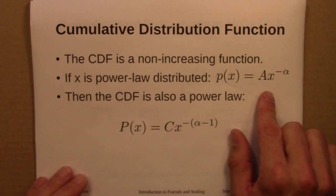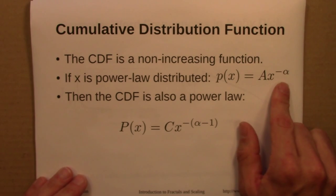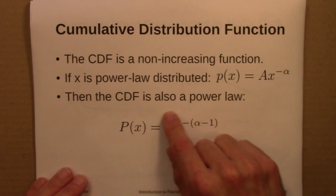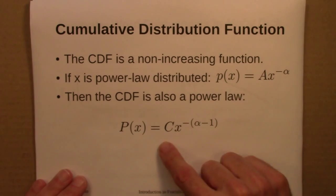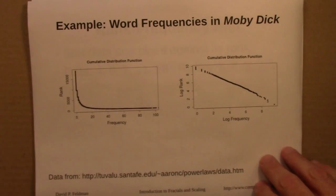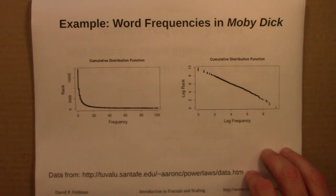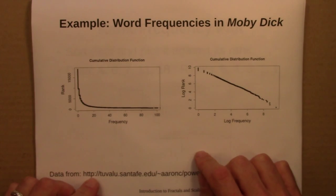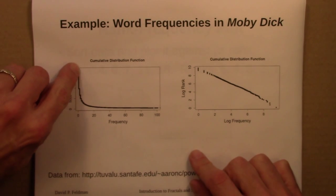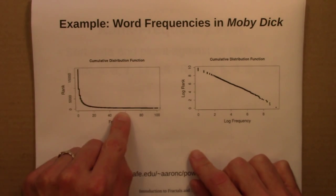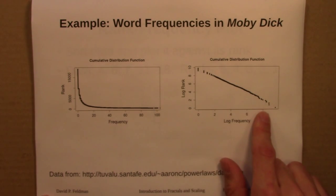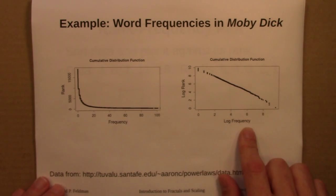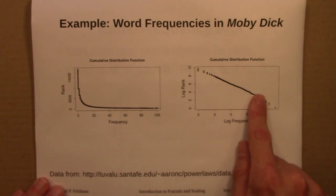If x is power law distributed with an exponent alpha, then the CDF is also power law distributed with a different exponent — alpha minus 1 instead of alpha — and a different constant. As an example, we can plot the CDF for word frequencies from the novel Moby Dick, which shows a typical staircase step function. On a log-log plot, a power law CDF appears as a nice linear behavior.